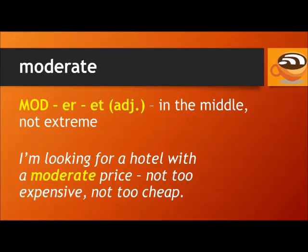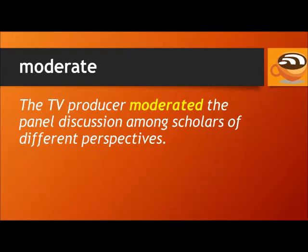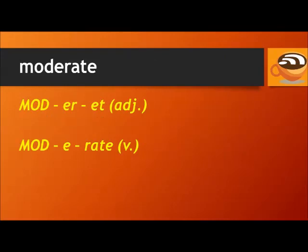Our next heteronym is 'moderate' and 'moderate.' 'Moderate' is an adjective, meaning in the middle, not extreme. For example: I'm looking for a hotel with a moderate price, not too expensive and not too cheap. 'Moderate' is a verb, meaning to make less extreme or to supervise or preside over. For example: the boss moderated her strongly negative comments to not hurt the employee's feelings. The TV producer moderated the panel discussion among scholars of different perspectives. Moderate. Moderate.